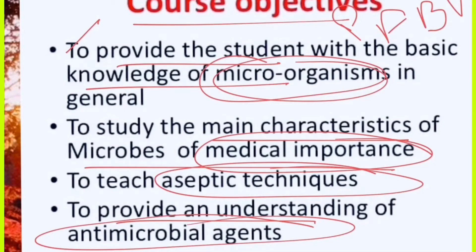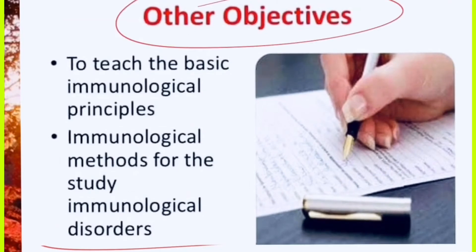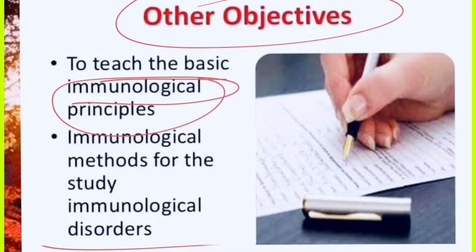Another objective is to provide understanding of antimicrobial rules and antibiotic development — how you can develop antibiotics from these organisms. You need to understand their basic physiology, their genetics, how they cause disease, and how you can stop that disease-causing process. Also important is understanding basic immunological principles — how the immune system responds to these organisms — so you need to understand immunology and the reaction between microorganisms and immune cells.